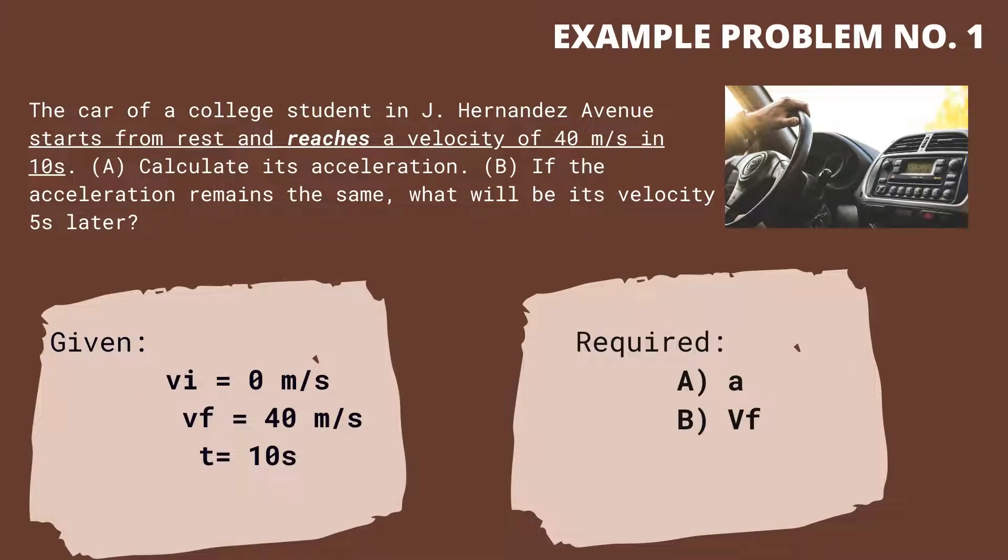To solve this problem, let us first identify and list down the information in variable form. It is stated that the car starts from rest. Therefore, the initial velocity or v sub i equals 0 meters per second. The final velocity or v sub f equals 40 meters per second. t equals 10 seconds.